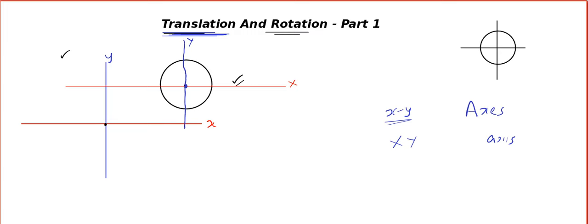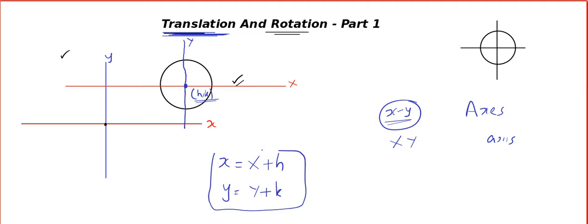In the old system, let us say this coordinate is called h, k — the new origin is h, k. Learn one small formula: small x is equal to capital X plus h, small y equal to capital Y plus k. I am not going into the derivation — if you want, you can search for it, but this will do the trick.